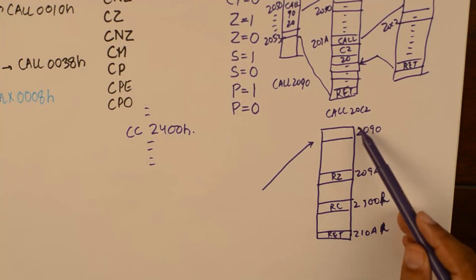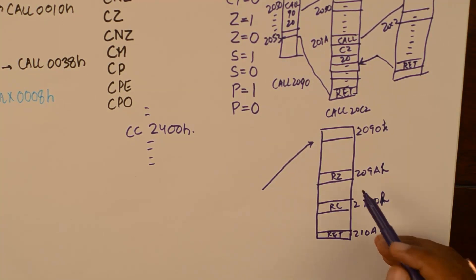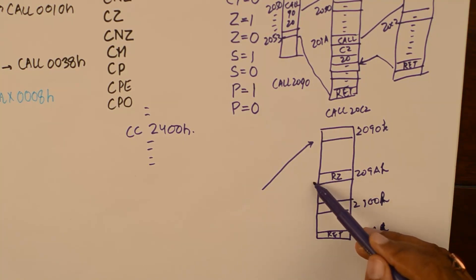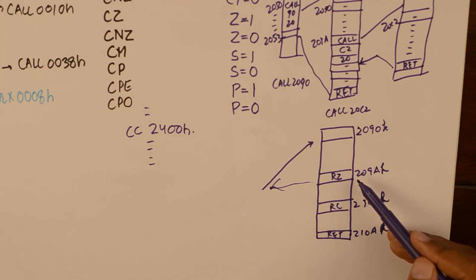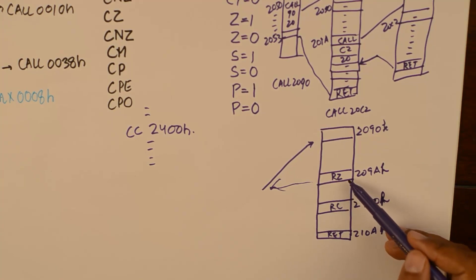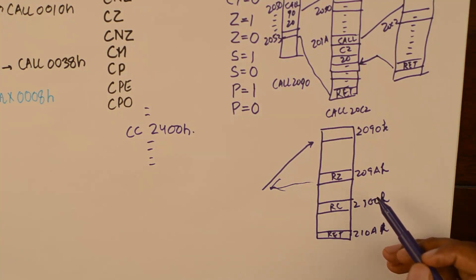The subroutine starts from one location but its ending happens at multiple locations. For example, if the zero flag is set at a certain point the processor will return back to the main program. However, if the zero flag is not set it will keep moving forward within the subroutine. Branching back to the main program is made possible from three different locations.